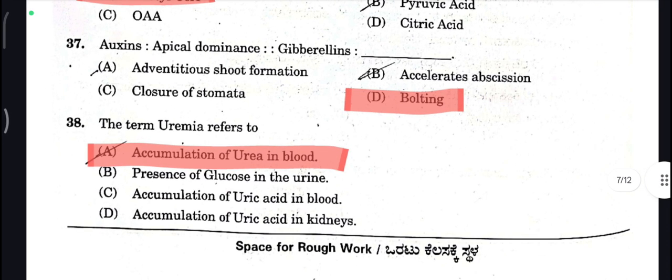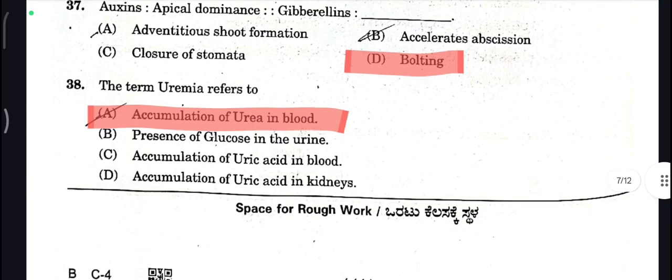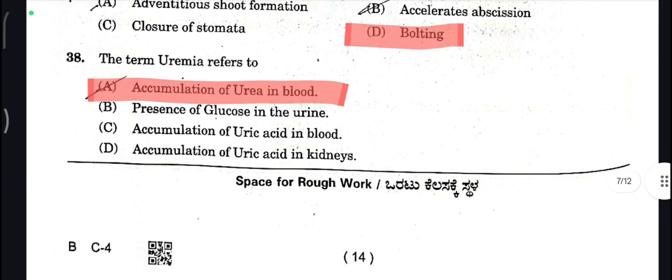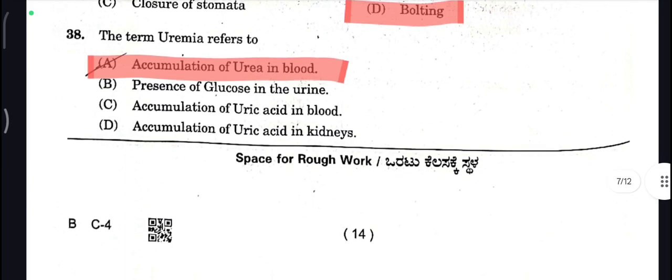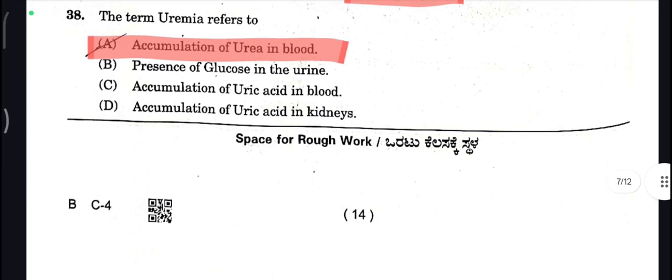Apical dominance — Gibberellins. Bolting — D is your correct answer here. The term uremia refers to accumulation of urea in blood — A is your correct answer.